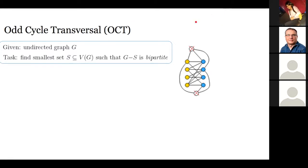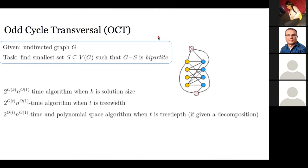I will start with an exemplary problem, odd cycle transversal, to provide some context. Here we are given an undirected graph and we ask for the smallest set of vertices that would hit all the odd cycles, or equivalently, the smallest set of vertices whose removal makes the graph bipartite. When we talk about parameterized algorithms, we first need to choose a parametrization.